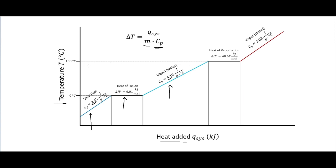When we get to 100°C, the boiling point, we reach the heat of vaporization. We have to add more heat without the temperature rising in order to again break the intermolecular forces between water molecules and turn it into vapor. Once it becomes a gas, we can again add heat and see the temperature keeps rising.